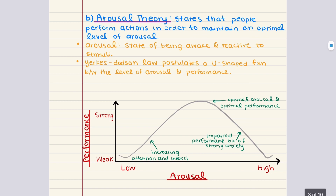Next up is arousal theory. Arousal is the psychological and physiological state of being awake and reactive to stimuli. It involves the brain stem, the autonomic nervous system, and the endocrine system, and it plays a very important role in behavior and cognition. Arousal theory states that people perform actions in order to maintain an optimal level of arousal. If arousal falls below the optimal level, the person seeks to increase it; when it rises above the optimum, one seeks to decrease arousal.